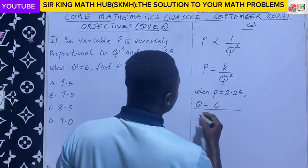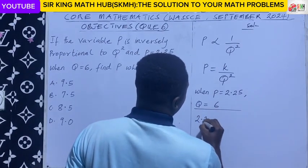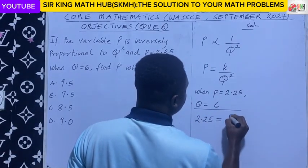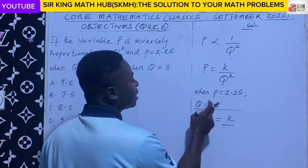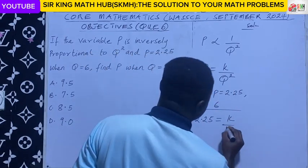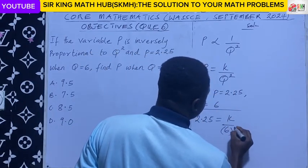Now, we are told that p is 2.25, so this should be equal to k. And then we are told that k o is 6. So 6 squared.